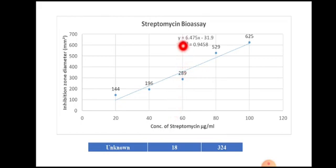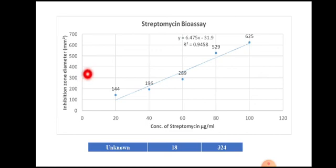The aim was to determine the concentration of streptomycin in a given sample by diffusion bioassay. The result is: the concentration of streptomycin in the unknown sample is found to be 56 micrograms per ml.